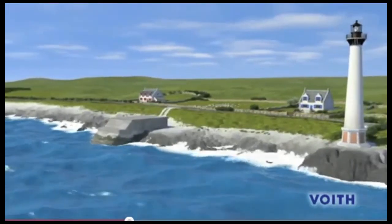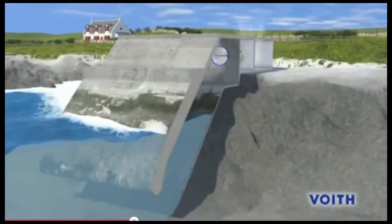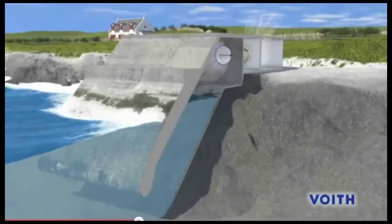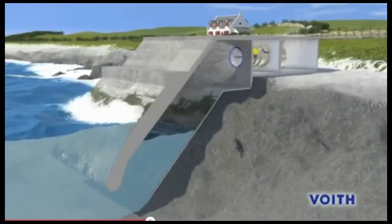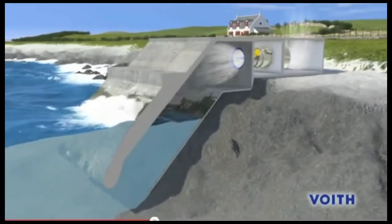We're going to look at an oscillating water column. So the gravitational potential energy of the water does work on air, pushing and pulling air through a special turbine called a wells turbine.